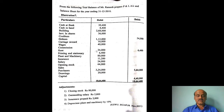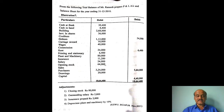Rent: Rs. 24,000. Printing and stationery: Rs. 6,400. Plant and machinery: Rs. 80,000. Insurance: Rs. 11,200. Salary: Rs. 24,000. Opening stock: Rs. 64,000. Purchases (debit side): Rs. 3,24,000. Sales (credit side): Rs. 5,64,000. Drawings: Rs. 20,000.